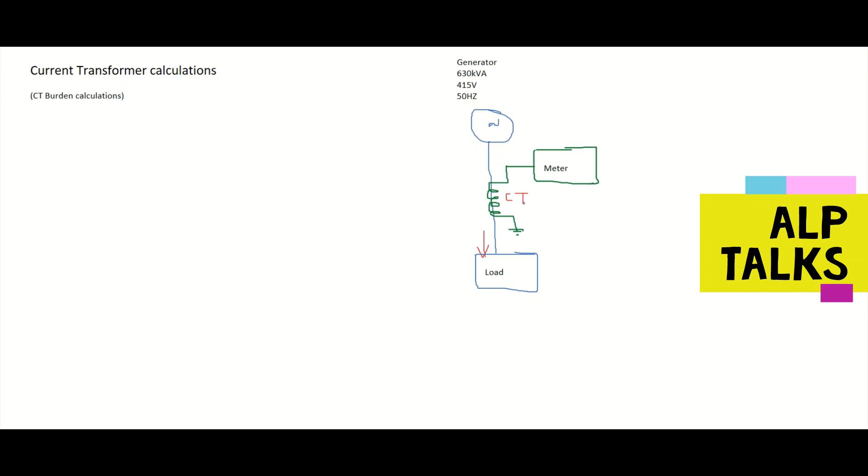So this is the CT, current transformer here. The metering CT, the burden for this CT is 0.2 VA. Similarly, the length of this wire cable, whatever cable is there, the length of that cable is 10 meters. The size of that cable is 2.5 square mm.